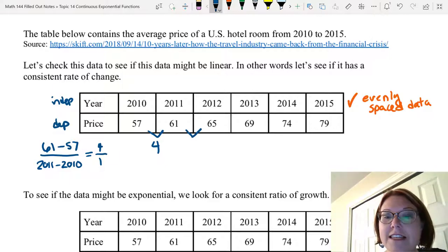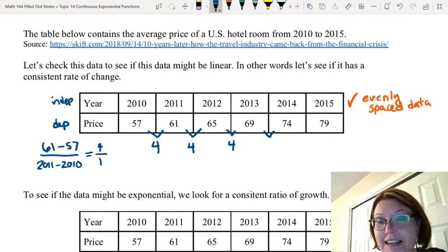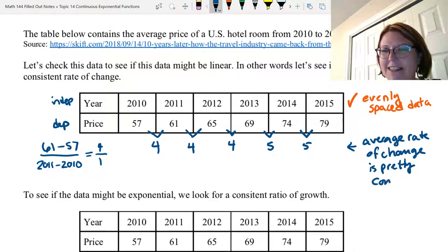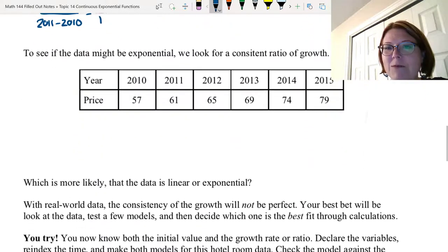Moving across, the next set would be 65 minus 61, which is 4. The next set is 69 minus 65, which is 4. The next set is 74 minus 69, which is 5. And the last set is 79 minus 74, which is 5. We do have relatively consistent data here. We have 4, 4, 4, 5, 5. It looks pretty good. This might be linear, but let's go ahead and check the data for exponentiality next.